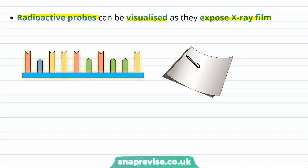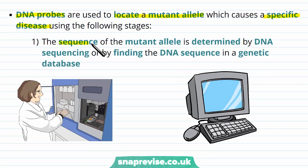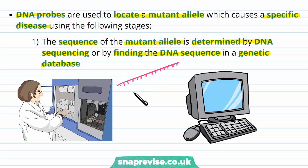DNA probes are used to locate a mutant allele which causes a specific disease. First, the sequence of the mutant allele is determined by DNA sequencing, or by finding the sequence in a genetic database. If a person wants to know if they carry a risky allele, we first need to know the sequence of that mutant allele — either by sequencing it or looking it up, since lots of this information is stored in bioinformatics databases.